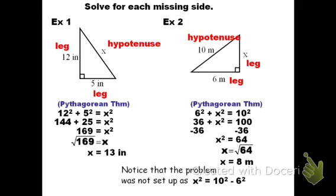Now let's look at one more example. Before we do, take notice of this important point — it's going to save some of you grief on tests and quizzes. The Pythagorean Theorem is the sum of the squares of the legs. Notice the problems are all set up using addition — they are not set up as a subtraction problem. It needs to be leg 1 squared plus leg 2 squared equals hypotenuse squared.